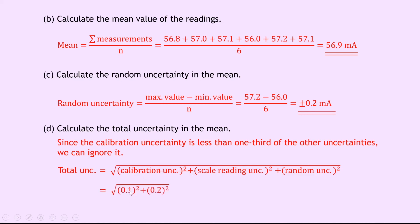We sub in 0.1 squared plus 0.2 squared, and this gives us an answer, once you square root it, of plus or minus 0.2 milliamps — again to one significant figure. If you wanted to write down your final result with your total uncertainty, you would get a current I of 56.9 plus or minus 0.2 milliamps. That's all for this video guys.